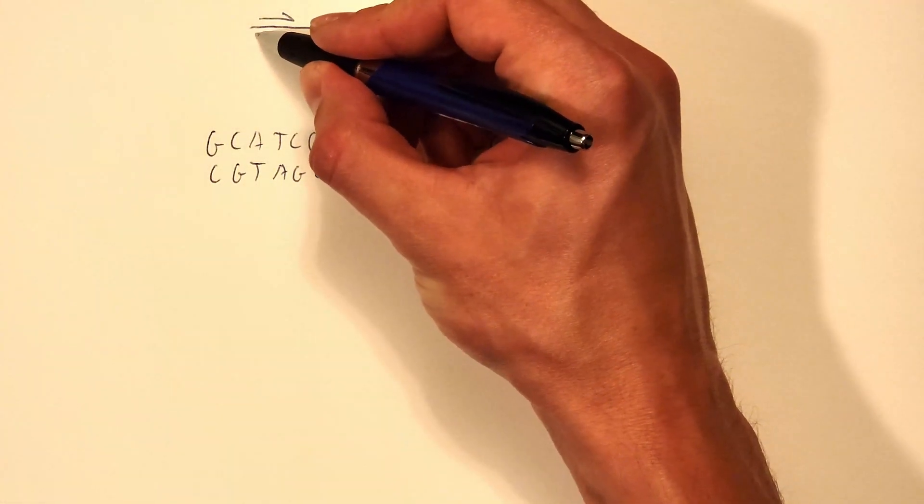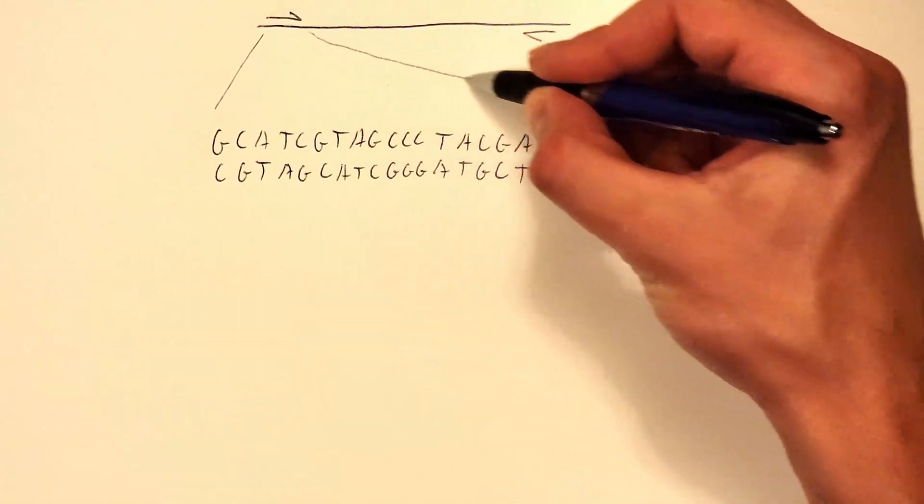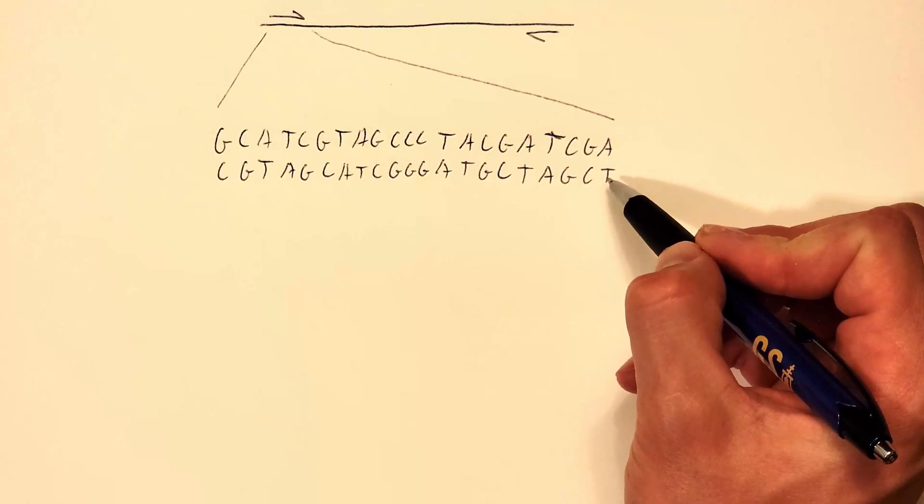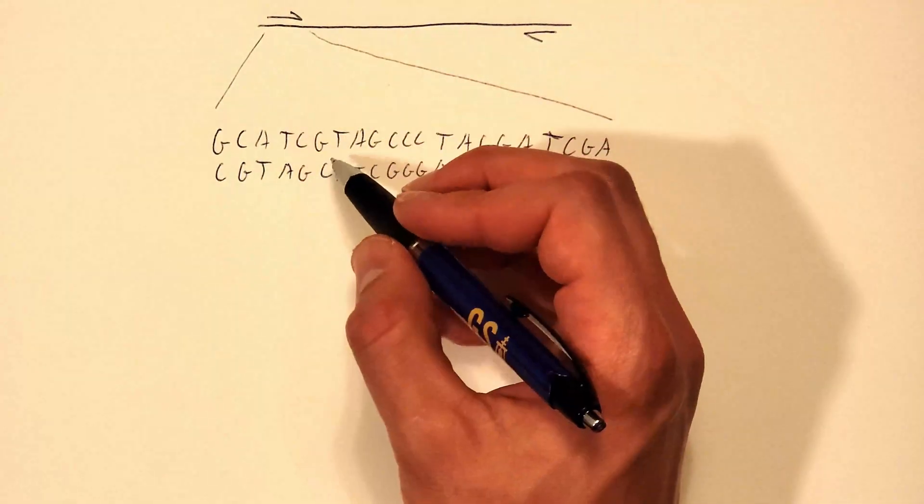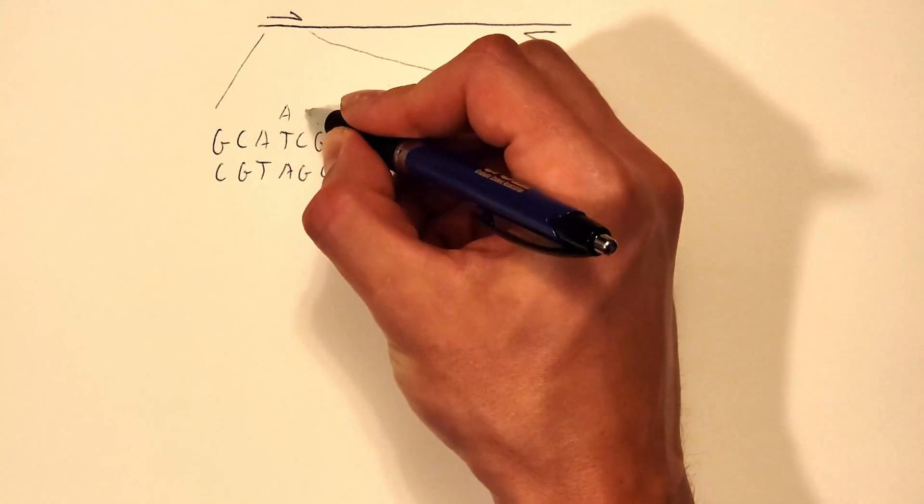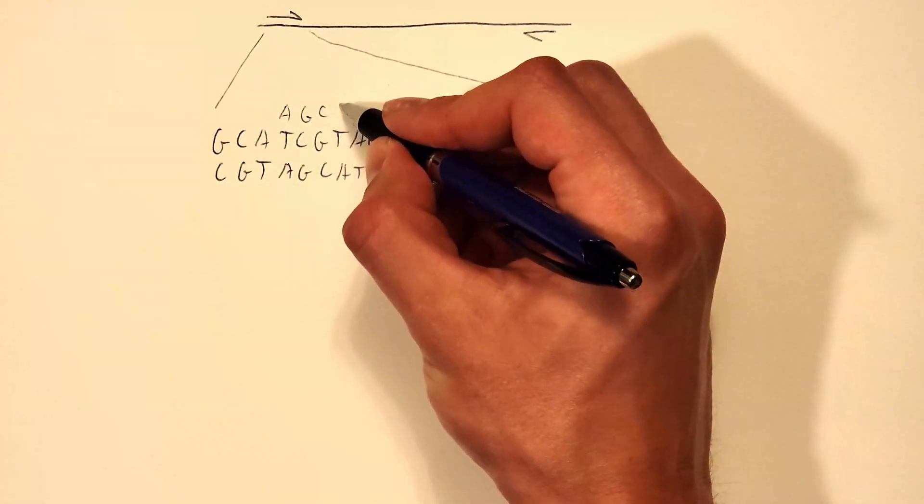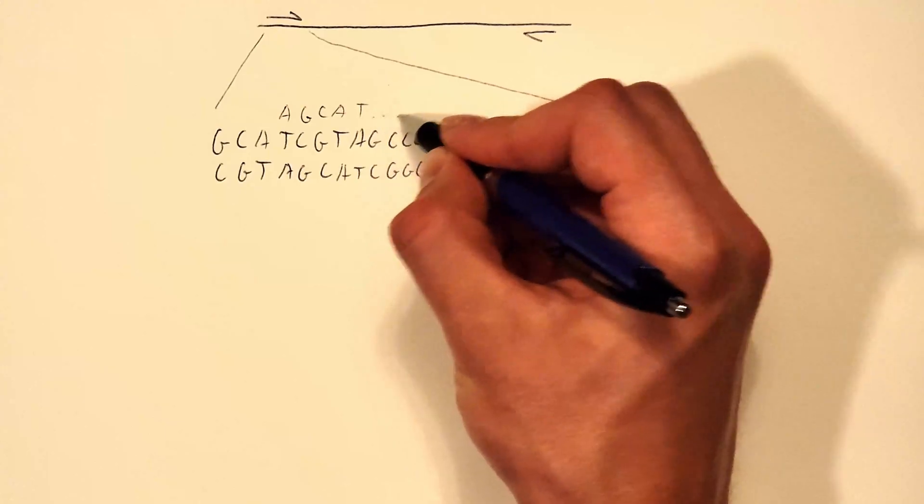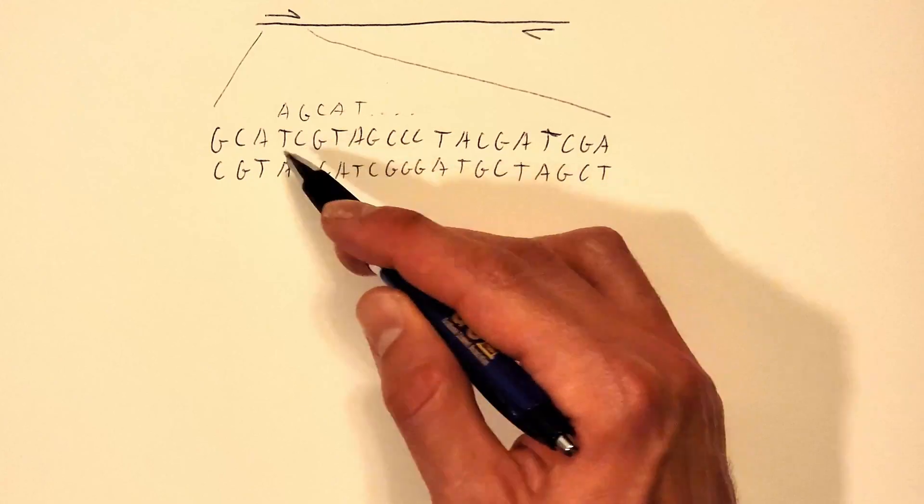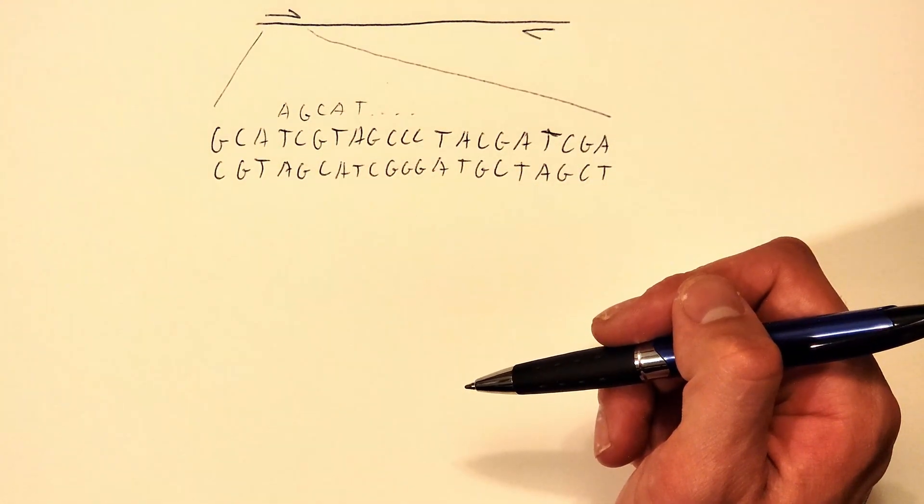So let's say we're zoomed in on this piece of DNA right here and we're looking at a primer that binds to this sequence. A forward primer will sit on the top of this strand and look something like this: A, G, C, A, T, dot dot dot. It will basically be complementary to the top strand of this double-stranded DNA sequence.